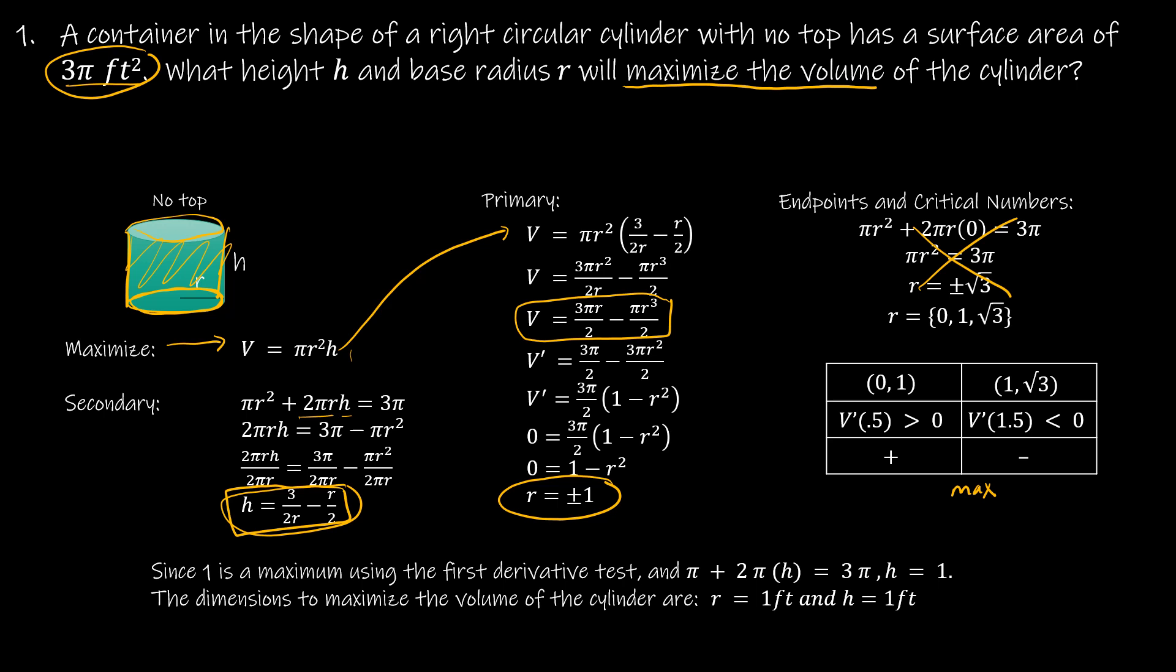And then I would plug in the maximum, the max of 1, back into this equation to find the height. So since 1 is a maximum using the first derivative test, and πr² + 2πrh = 3π, h has to be 1. The dimensions to maximize the volume of the cylinder are radius is 1 foot and the height is 1 foot.